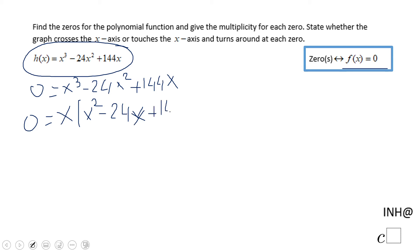Now we look at this quadratic to see if we can factor it. Yes, it can be factored easily. We're looking for two numbers whose product is 144 and sum is -24. That will be -12 and -12. Some may notice this is a perfect square, so we end up with x(x - 12)².